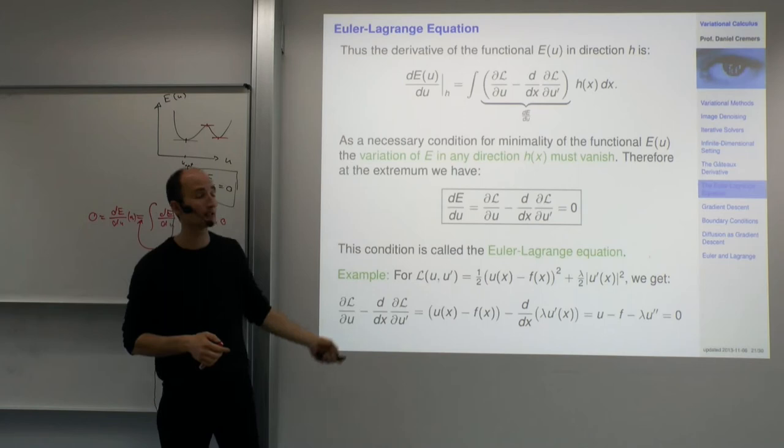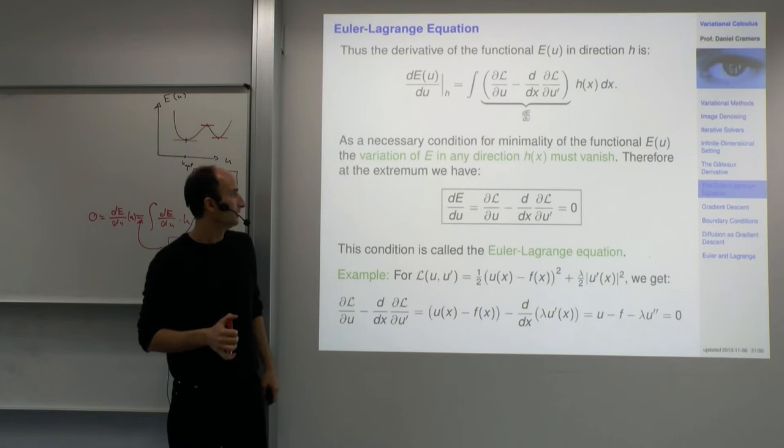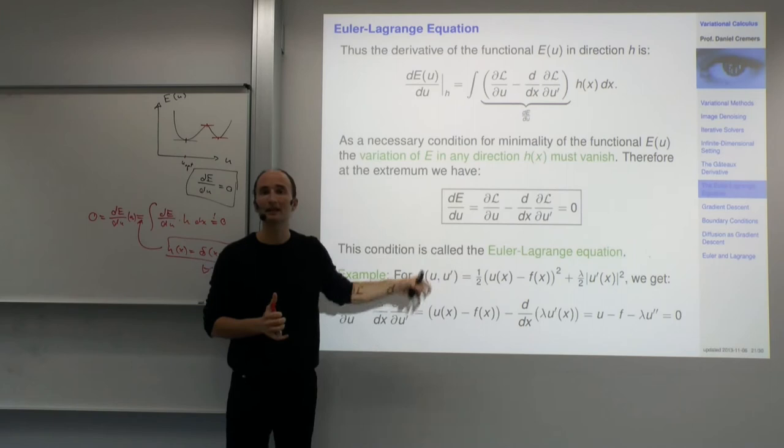This is what gives us the extremality principle for functionals — the Euler-Lagrange equation. This is a key component in variational methods.